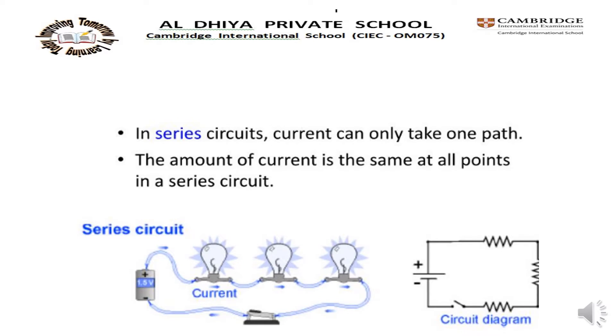In a series circuit, the current can only take one path. The amount of current is the same at all points in a series circuit.